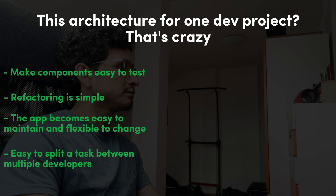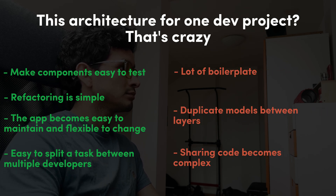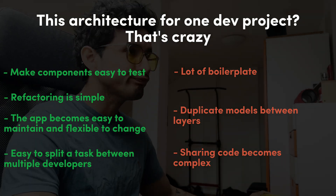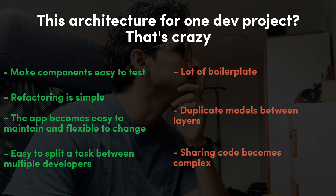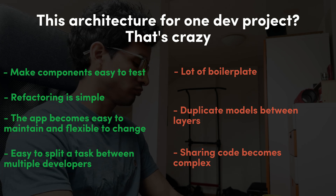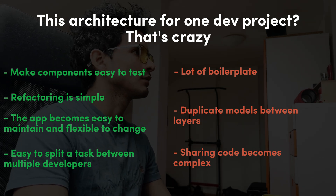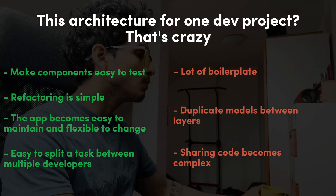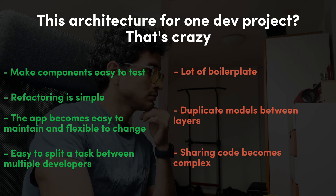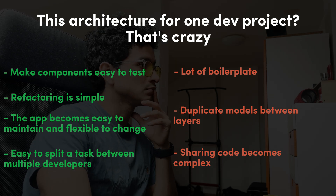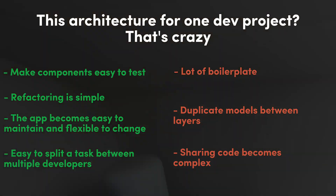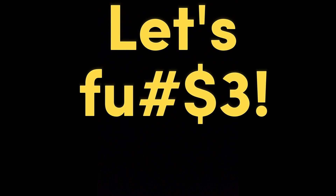Some cons I found: there is a lot of boilerplate even for simple screens, you might duplicate models in the layers — and this is probably what I hate the most about this. Sharing code between features becomes complex; it might be business logic code or models between features. Maybe you want to create a core package for models, or maybe you want the features to be as independent as possible — this will depend on decisions you make with your team. But the main reason I'm choosing this architecture is because we are using it in my daily job and I want to get better at it, try new things, and see if I can come up with new ideas for my team. Now let's code!